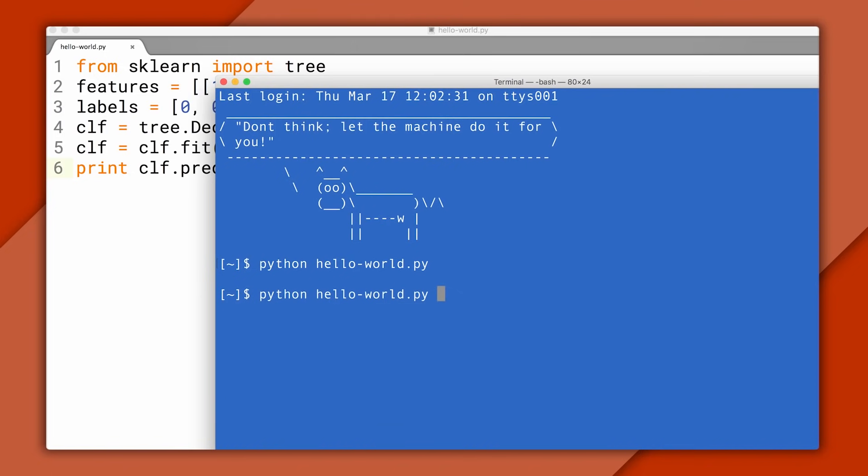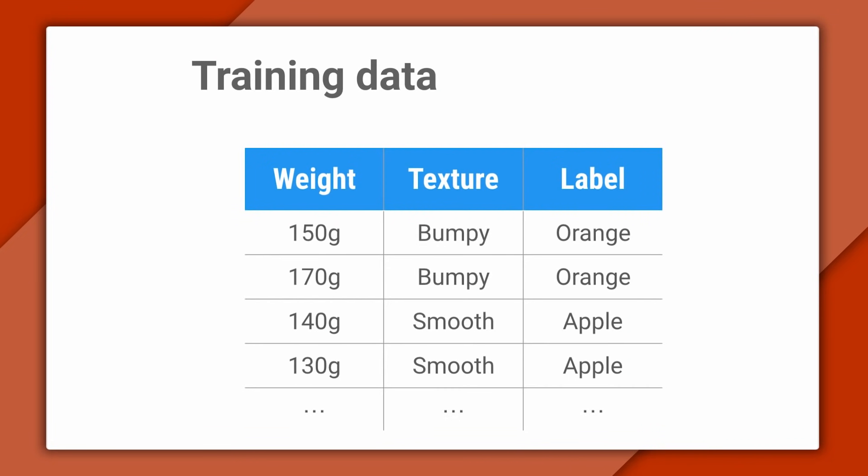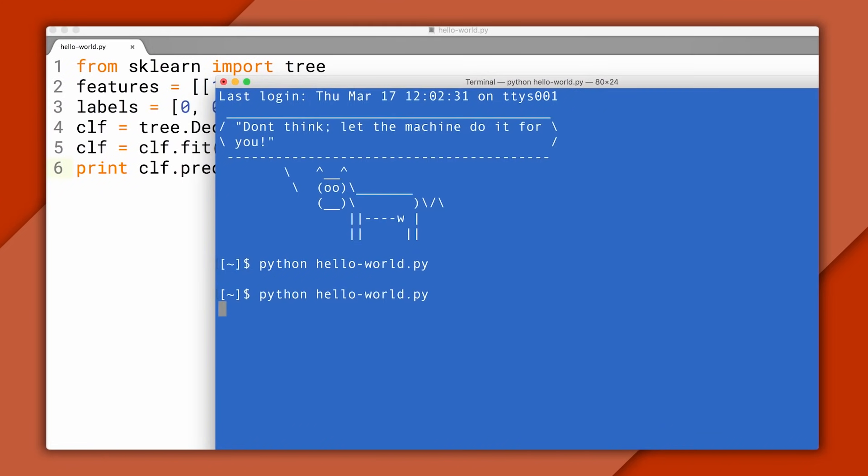If you had to guess, what would you say the output should be? To figure that out, compare this fruit to our training data. It looks like it's similar to an orange because it's heavy and bumpy. That's what I'd guess anyway, and if we hit enter, it's what our classifier predicts as well.